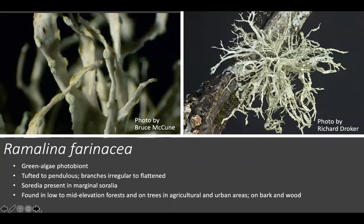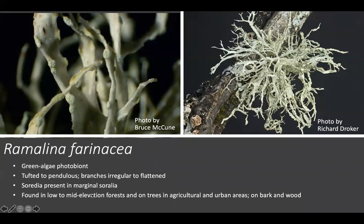Next we have Ramalina farinacea, which also has a green algae photobiont. It can be confused with Evernia prunastri, but up close you'll quickly realize this lichen has irregularly shaped branches versus the very flattened branches of Evernia. It also has soredia in soralia along the margins — these oval-shaped structures are soralia and the powdery granules inside are soredia. Evernia rarely produces soredia and is generally rather smooth comparatively. Ramalina farinacea is found in low to mid-elevation forests on trees and in agricultural and urban areas.